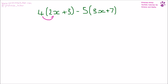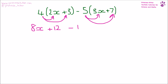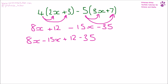Here we have four outside the brackets, so I want to times it by each term inside, and then five times by each term in the second bracket. Four times 2x gives 8x, plus 12, minus 15x, minus 35. Collecting all the terms: 8x minus 15x gives minus 7x, and 12 minus 35 gives minus 23.